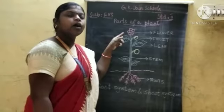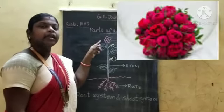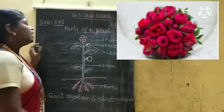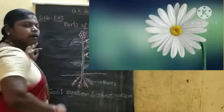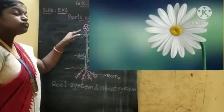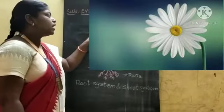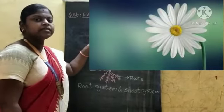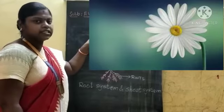Flowers are the most attractive and colorful parts of the plant. They grow from the bud and have a specific smell, which attracts birds and insects.